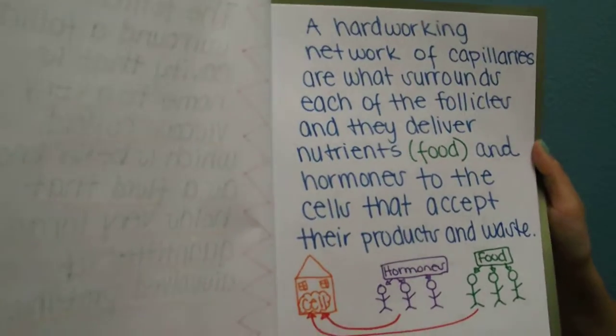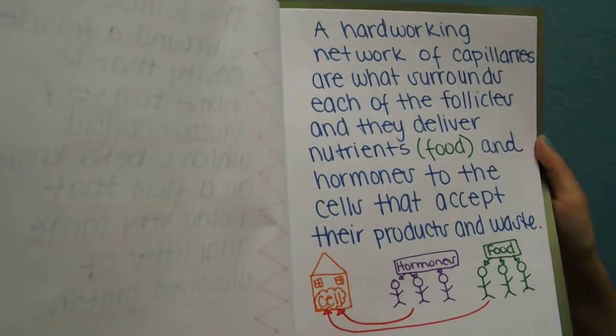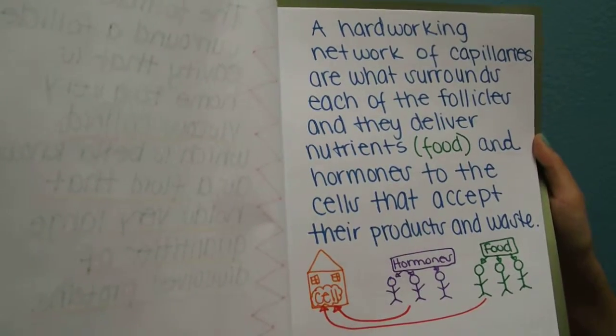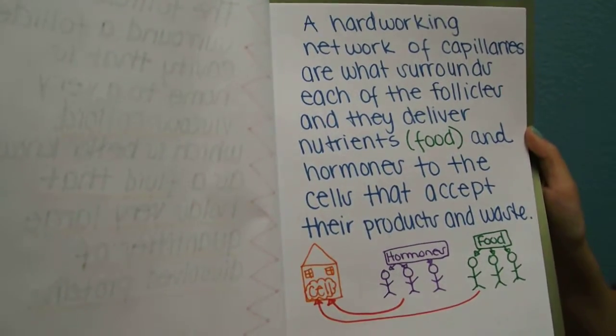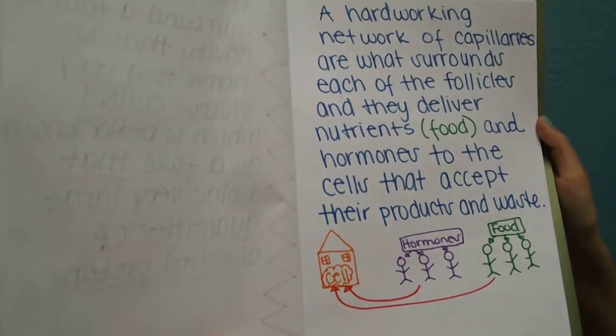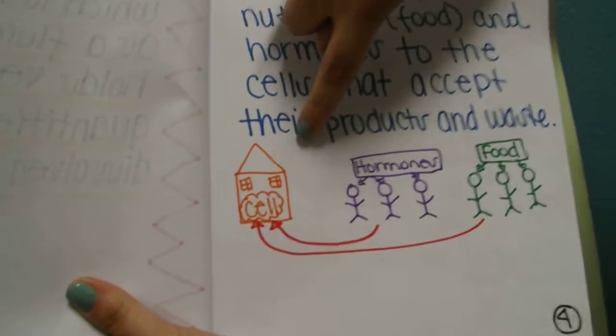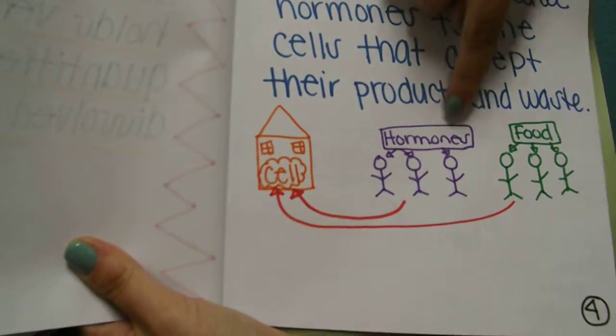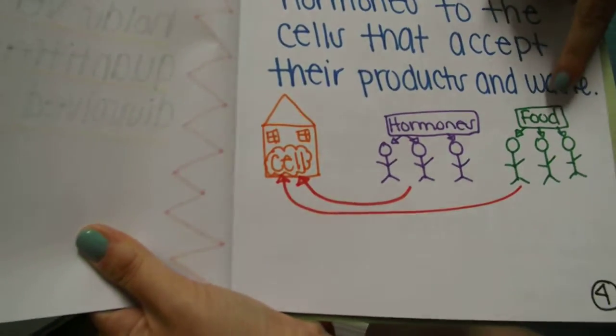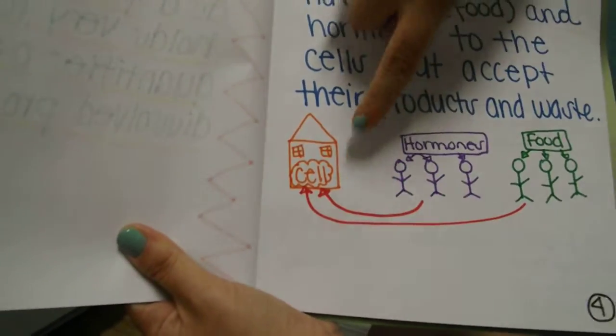A hard-working network of capillaries surround each of the follicles and they deliver nutrients or food and hormones to the cells that accept their products and waste. So here we have a cell as the home, hormones as the purple, food as the green, and they're all going back to the cell.